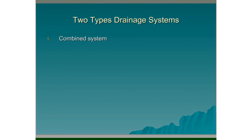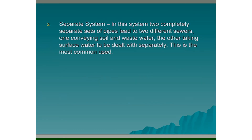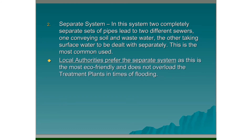There are two types of drainage systems: the combined system and the separate system. In the combined system, all surface water, waste water and soil water are sent into the drainage system together. In the separate system, two completely separate sets of pipes lead to two different sewers — one conveying soil and waste water, and the other taking surface water to be dealt with separately. Local authorities prefer the separate system as it is the most eco-friendly and does not overload treatment plants in times of flooding. The separate system is the only system used nowadays; you will only see a combined system in a very old building.